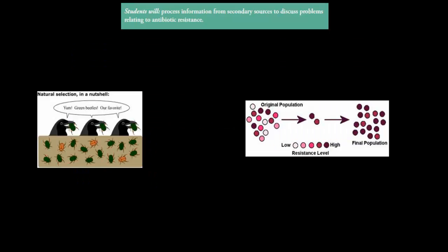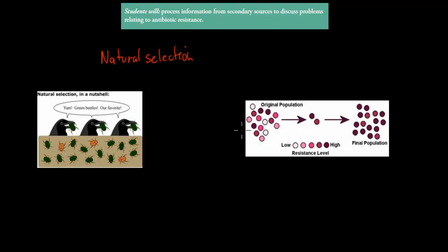To understand this video properly, you need to quickly go over the idea of natural selection. With natural selection, basically we have some organisms or members of a species which are better adapted to the environment than others, and the ones which are better adapted will be able to reproduce and thereby survive, and their genes will be passed on to the next generation.